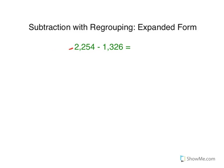So I'm going to go ahead now and expand this number out. We call this first number in the subtraction equation the minuend. So now I'm going to expand this number, 2,254.